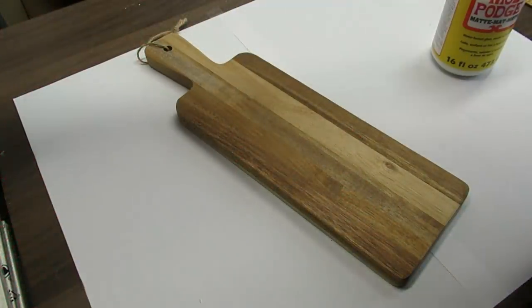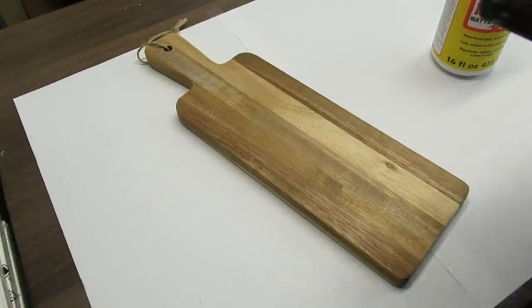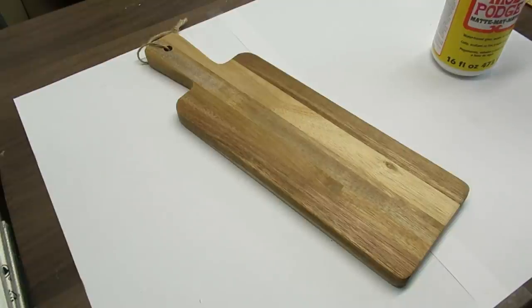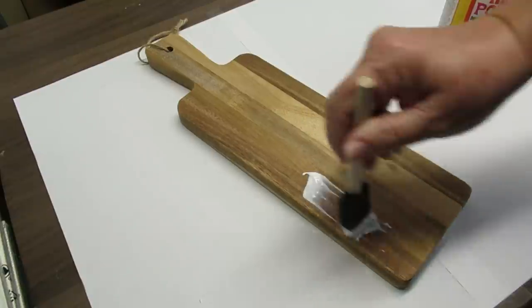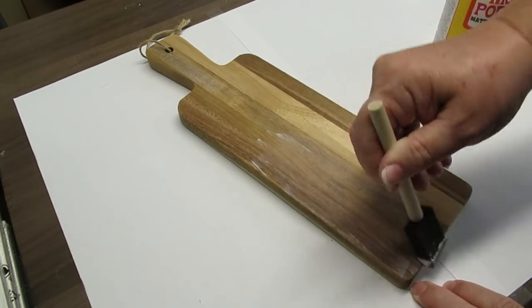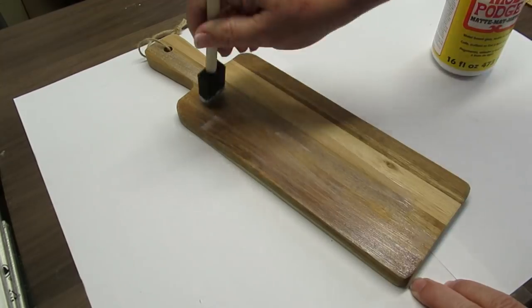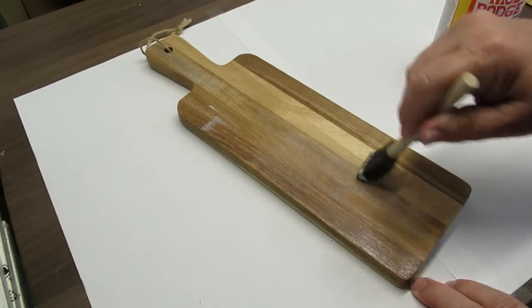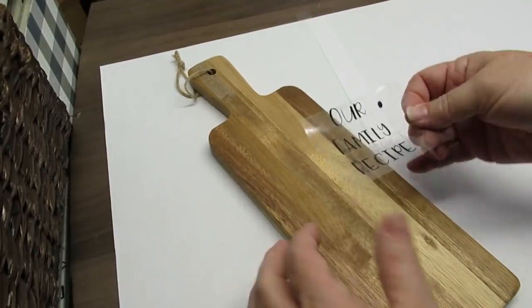This last project is super cute. I'm taking this wooden cutting board, it was four dollars at my Dollarama store and it's acacia wood. What I'm doing is sealing it with a coat of Mod Podge because I'll be using some of my ink and paint pens on it and I don't want them to bleed.